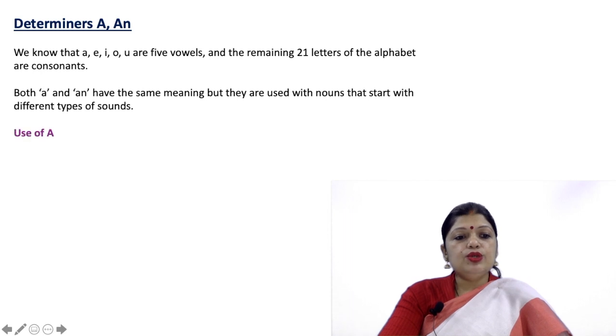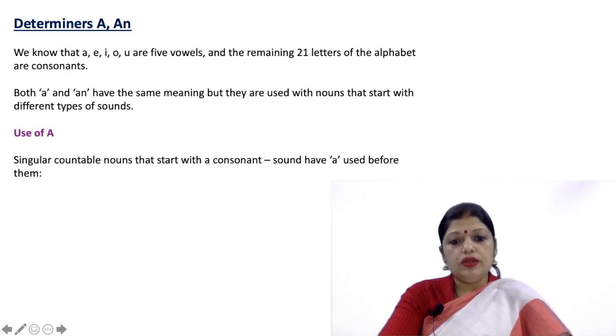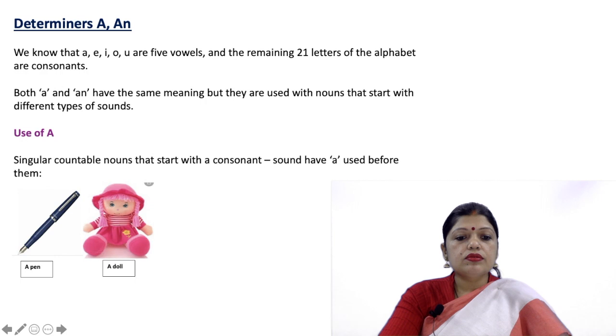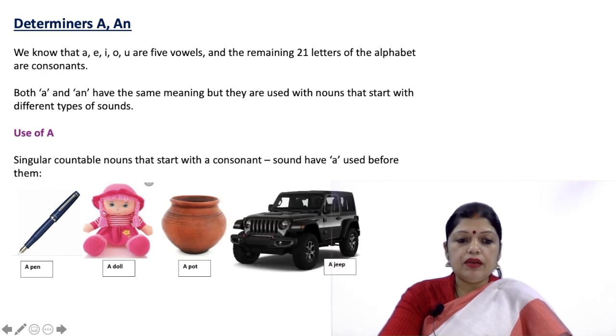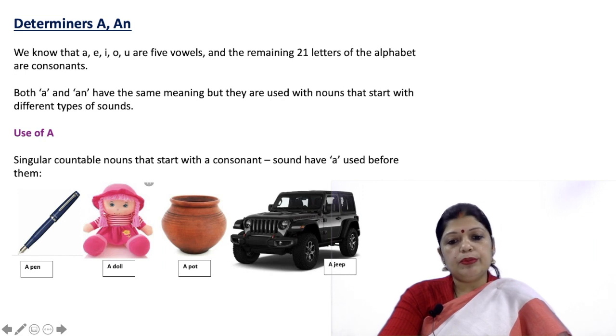Now let us see use of A. Singular countable nouns that start with a consonant sound have A used before them. Like a pen, a doll, a pot, a jeep.